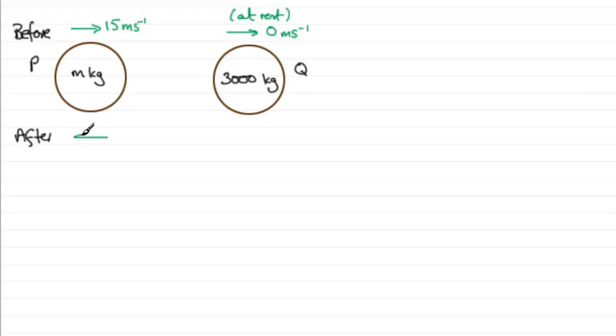And Q moves off with a speed of nine meters per second. Well obviously it's got to move to the right if they hit, okay? You won't suddenly decide to move to the left, so might as well put that in. Then there's nine meters per second.